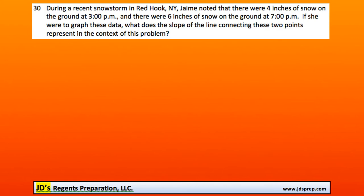Welcome to question number 30 from the June 2016 Algebra Regents exam. In this question we've got a snowstorm in Red Hook and someone notices there are four inches of snow on the ground at 3 p.m. and six inches of snow at 7 p.m. If she were to graph the data, what does the slope of the line connecting the two points represent in the context of this problem?